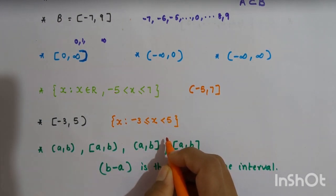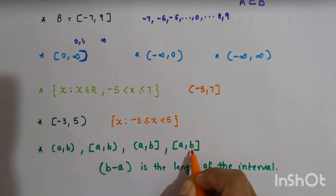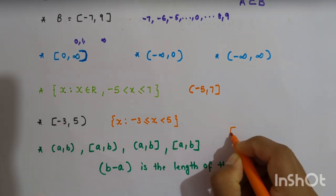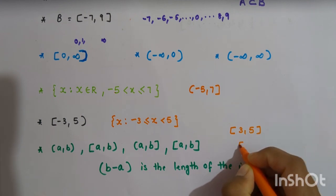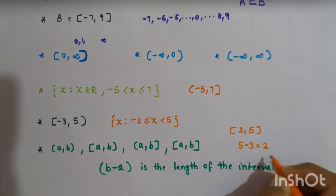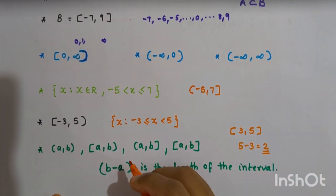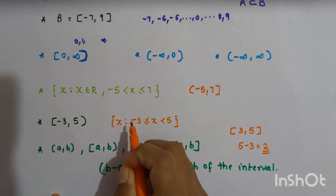We have discussed the four types of intervals: both sides open, one side closed and one side open, and both sides closed. For any of these four intervals, the number b - a is called the length of the interval. For example, for the interval (3, 5), b - a = 5 - 3 = 2, which is the length of the interval. In this video we have discussed the topic intervals as subsets of R. I hope it is clear to you. Thank you.